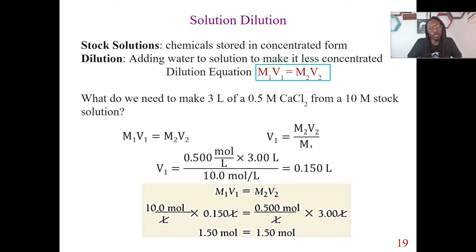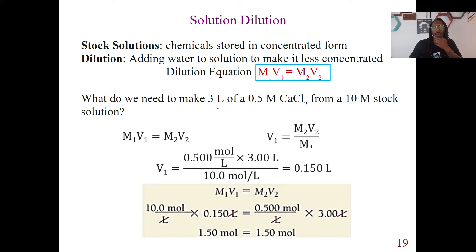And of course, you're going to have to do some math here to determine what you need to do. So the problem is: what do we need to make three liters of a 0.5 molar calcium chloride from a 10 molar stock solution? Basically, we're going to have to use our M1V1 equals M2V2 equation. Notice what they're asking — how are we going to make three liters of a 0.5 molar calcium chloride solution? This is what we're trying to make, and we have our concentrated stock solution that's 10 molar.